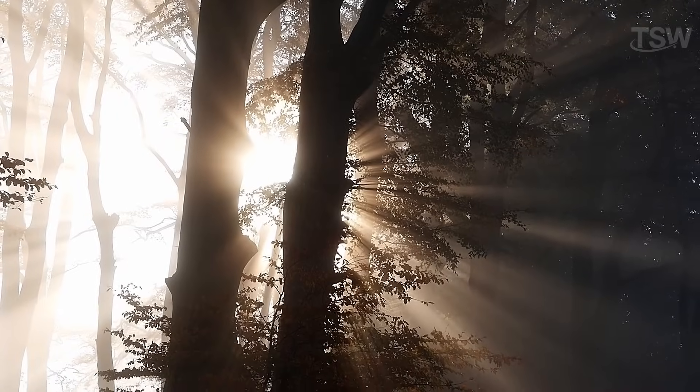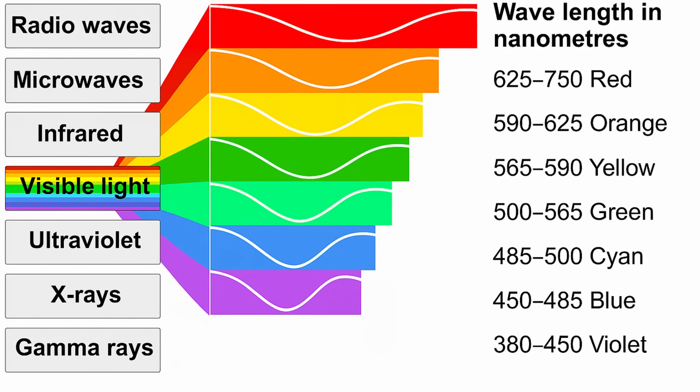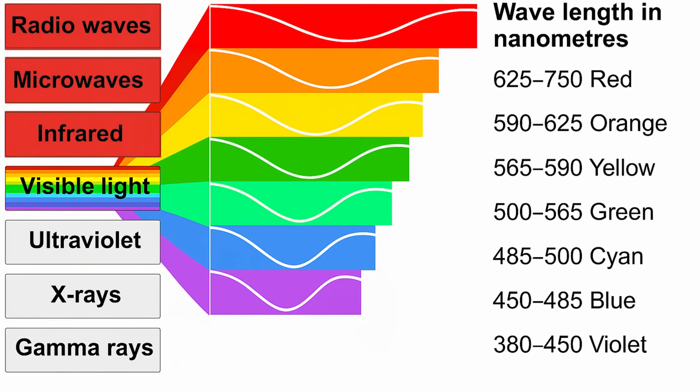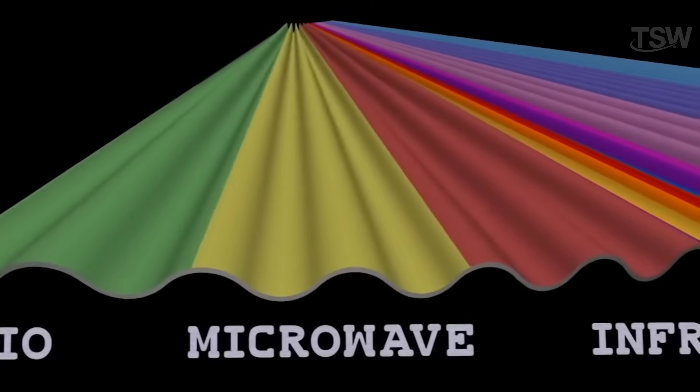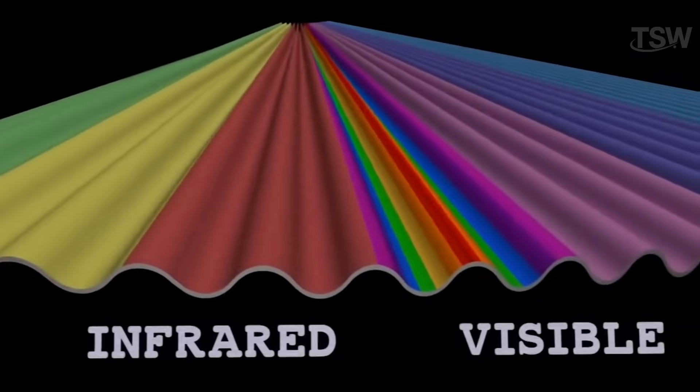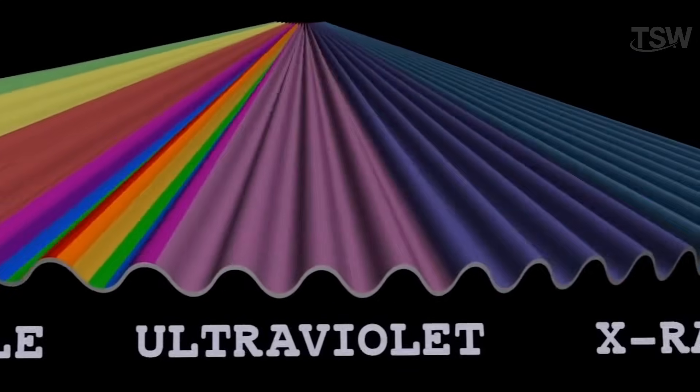To make things even more complicated, our eyes can only detect a small portion of the electromagnetic spectrum, what we call visible light. But light actually comes in many forms and wavelengths, such as radio waves, microwaves, infrared, ultraviolet, X-rays, and gamma rays. All of these types of light exist in space, but we can't see them without the help of specific instruments.